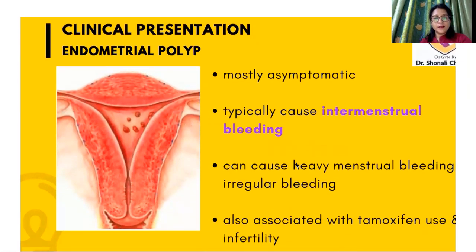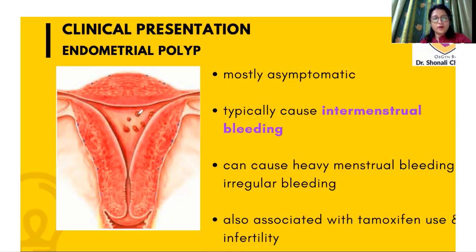What is the clinical presentation of endometrial polyp like? We can have a look at the picture here on the left side — a number of polypoidal growths can be seen arising from the endometrium. Now these polypoidal growths are prone to bleeding. Mostly endometrial polyps are asymptomatic, but when they do cause symptoms they will cause abnormal bleeding, and they typically cause intermenstrual bleeding.